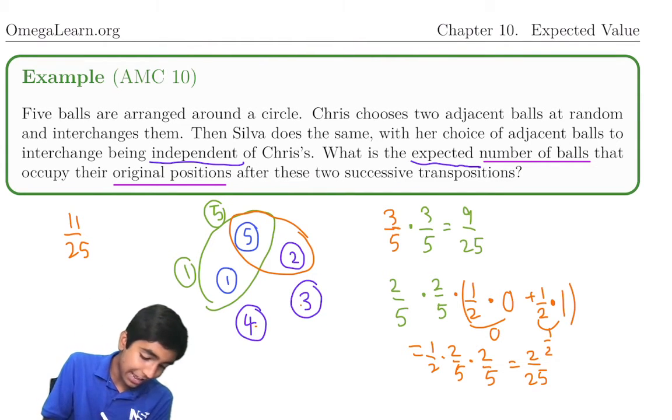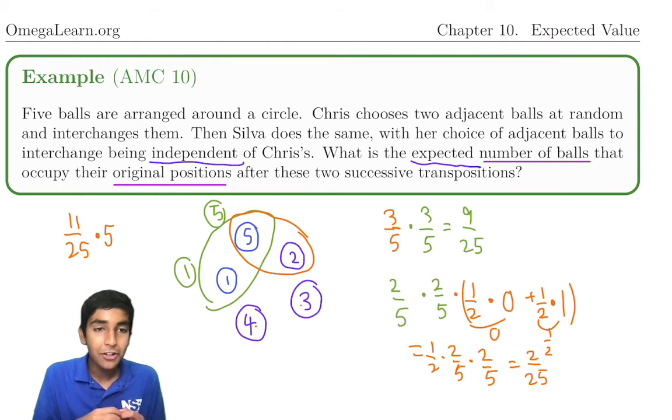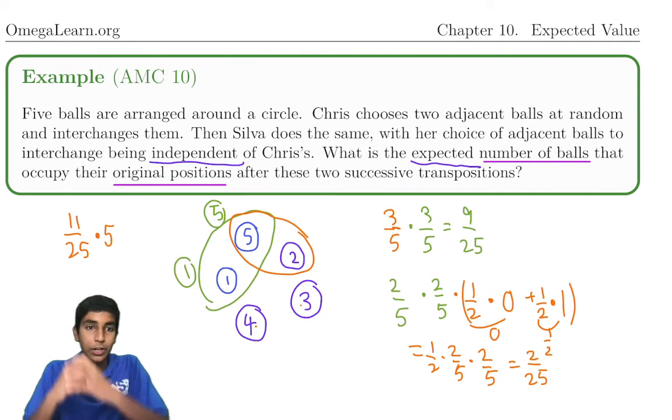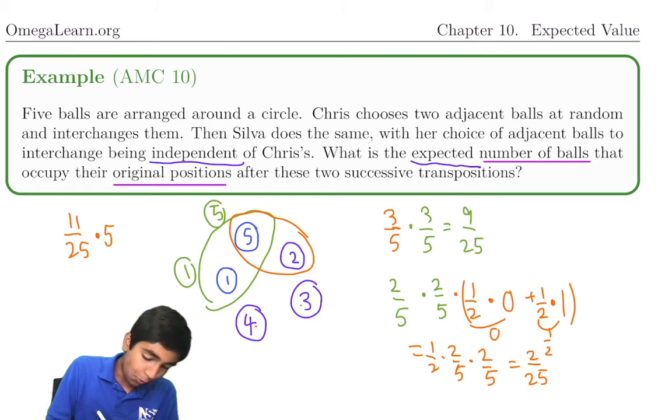Linearity of expectation, because the probability that every ball goes back to its original position is just eleven over twenty-five. The overall expected value is just that times five. The linearity of expectation in action gives us an answer of two point two.